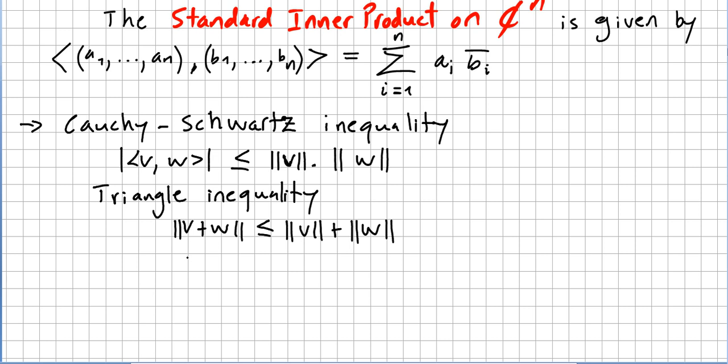Remember that these vectors v and w, if we are in an inner product space, they are said to be orthogonal or perpendicular—we always use the word orthogonal—if the inner product of v and w is zero.